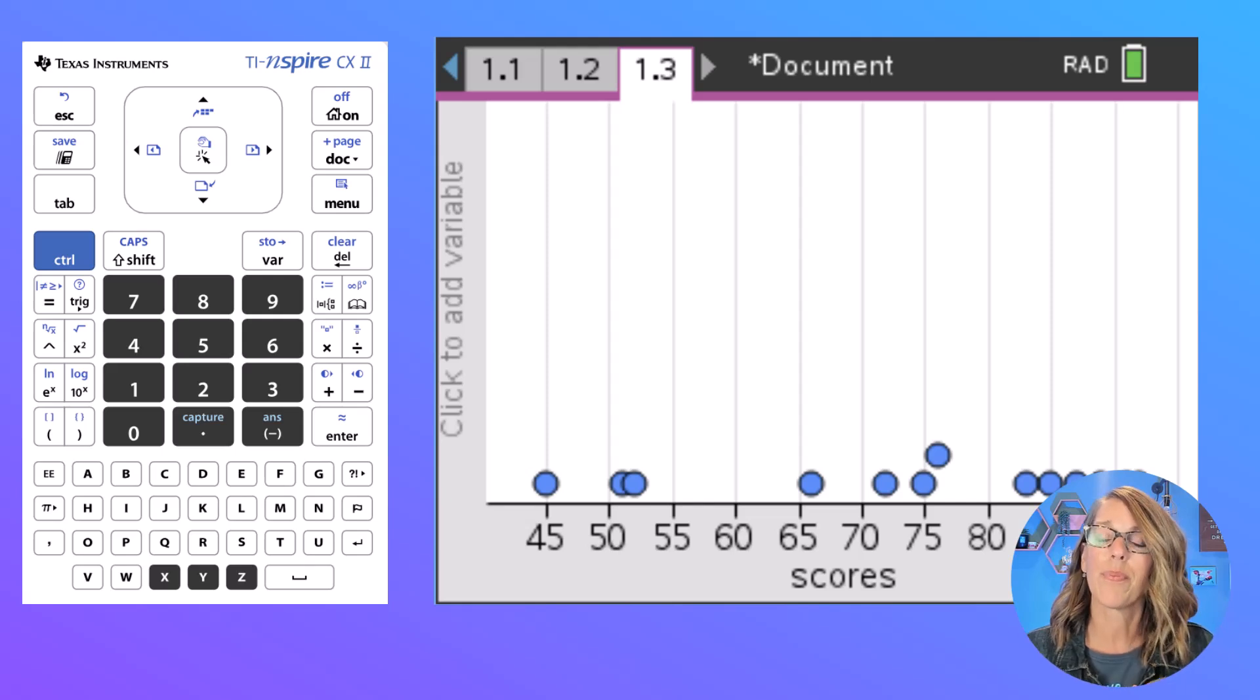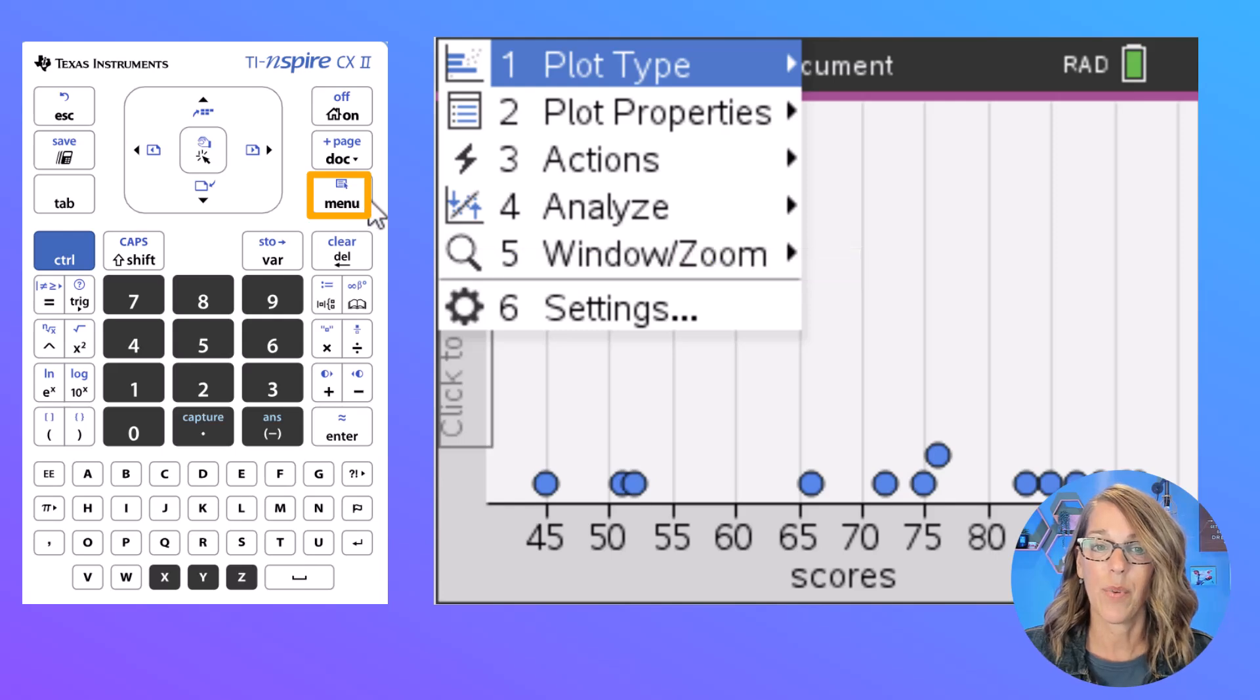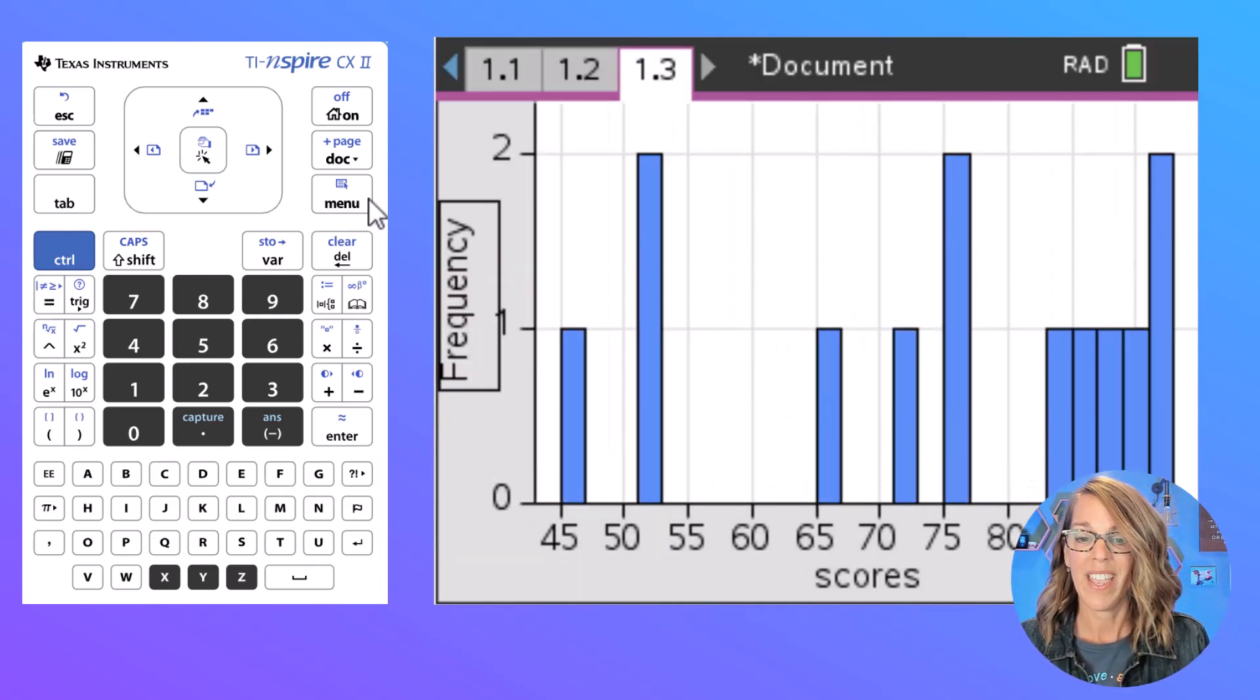It guesses a dot plot, but we really want a histogram. Now from here, menu is going to do everything else for us. So I'm going to click that menu button and we want to change the plot type, which is number 1. We want to change that to a histogram, which is number 3, and it just gives me a default here for my bins or my class widths.